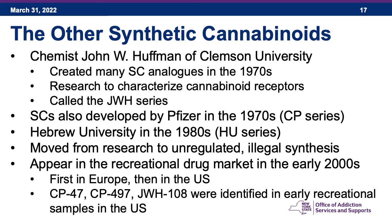The other synthetic cannabinoids — commonly known as Spice and K2 — have an interesting history. Chemist John W. Huffman at Clemson University created many synthetic cannabinoid analogs in the 1970s through research aimed at better understanding cannabinoid receptors. These were called the JWH series. Synthetic cannabinoids were also developed by Pfizer in the 1970s (the CP series) and by Hebrew University in the 1980s (the HU series). These were all meant for research but got out of the lab and moved into the unregulated illegal synthesis market.